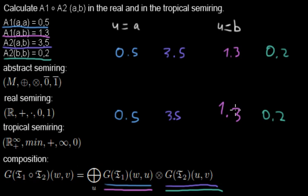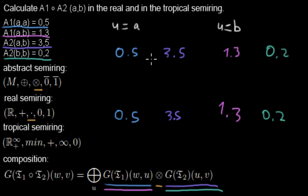Now we have all the weights we need. We want to multiply the weights that share the same U. In our abstract semi-ring definition, multiplication is at the third position. For the real semi-ring, this is standard multiplication, so we multiply those weights together. For the tropical semi-ring, the multiplication is addition, so we add those weights to each other.